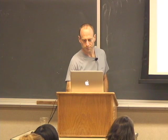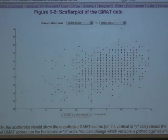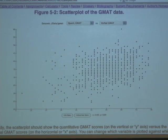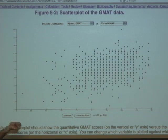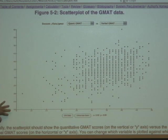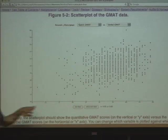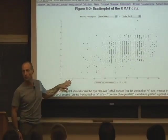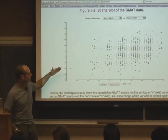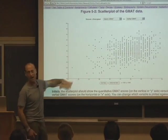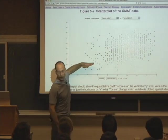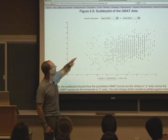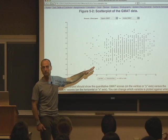A scatter plot is one of the best tools for looking at associations. Each dot represents one of the 913 students, with one variable on each axis. Here, the vertical axis shows quantitative GMAT score and the horizontal axis shows verbal GMAT score. There's a lot of scatter, but generally an upward trend — people who did better on the quantitative also tended to do better on the verbal.